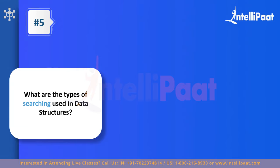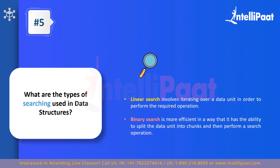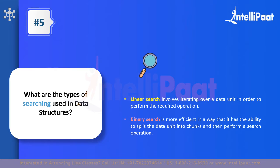Question five: what are the types of searching methodologies used in data structures? There are two main types: linear search and binary search. Linear search moves across data in a linear fashion, one element after another. Binary search is more efficient — it splits the data in the middle and searches either the left or right side depending on whether the target value is lesser or greater, then repeats this process on the resulting subsets.